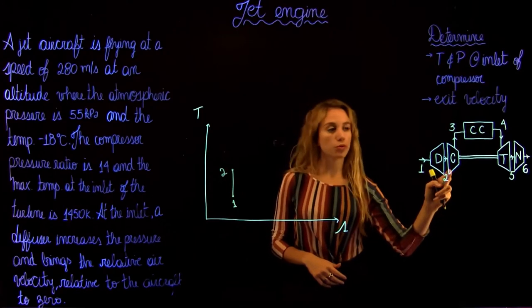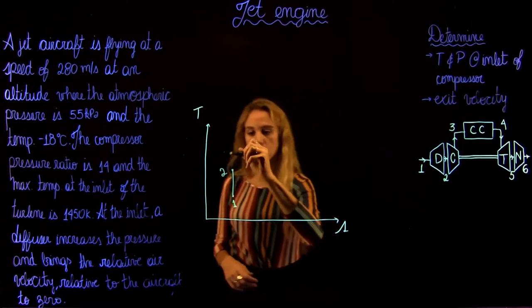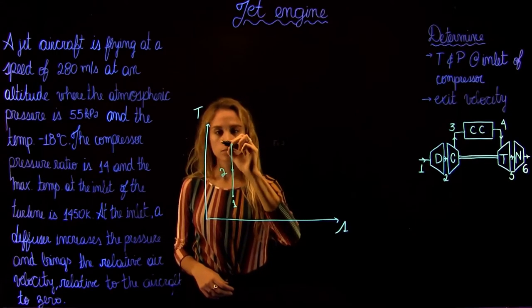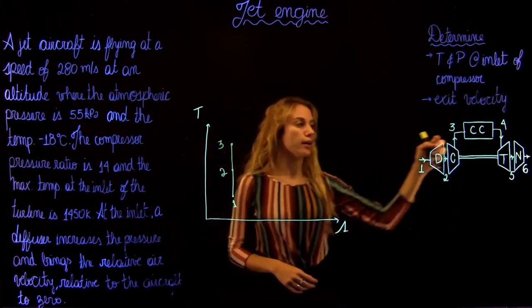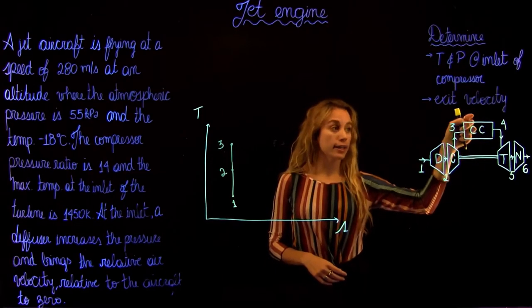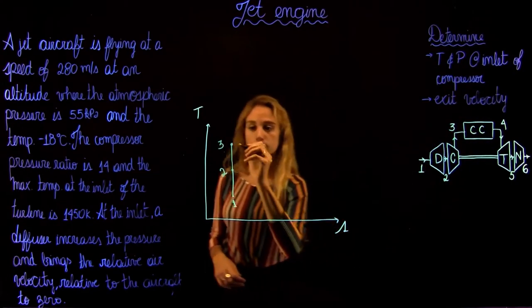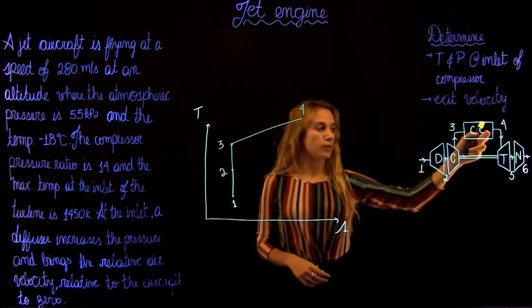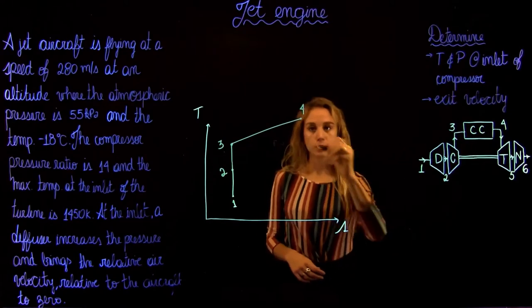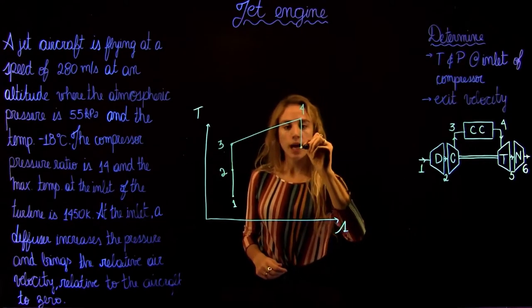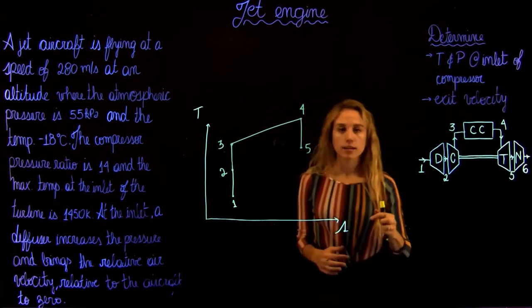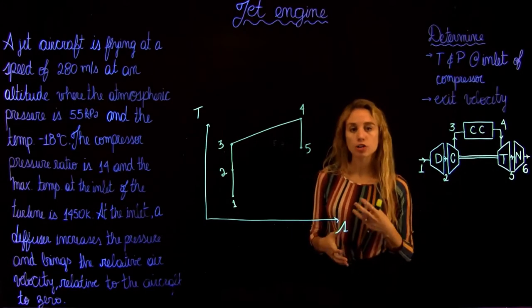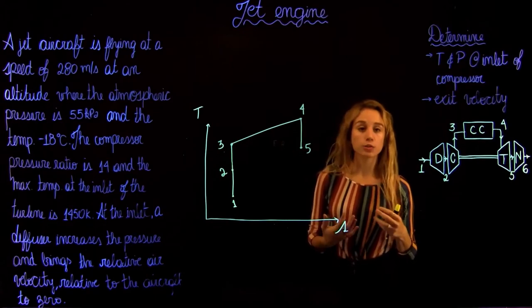Then we're going to go through the isentropic compression in the compressor. From state 3 to 4, we are adding heat at constant pressure. Then we go through the isentropic expansion in the turbine. In a jet engine, the power produced by the turbine is just enough to drive the compressor and auxiliary equipment, so the actual net work is zero.